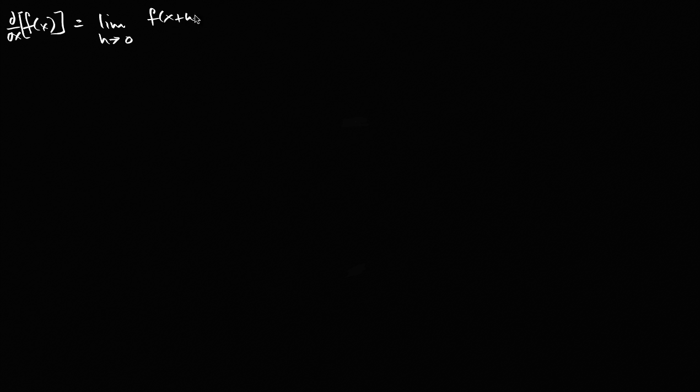What I hope to do in this video is give you a satisfying proof of the product rule. So let's just start with our definition of a derivative. If I have the function f of x and I wanted to take the derivative of it, by definition, the derivative of f of x is the limit as h approaches zero of f of x plus h minus f of x, all of that over h. If we want to think of it visually, this is the slope of the tangent line.